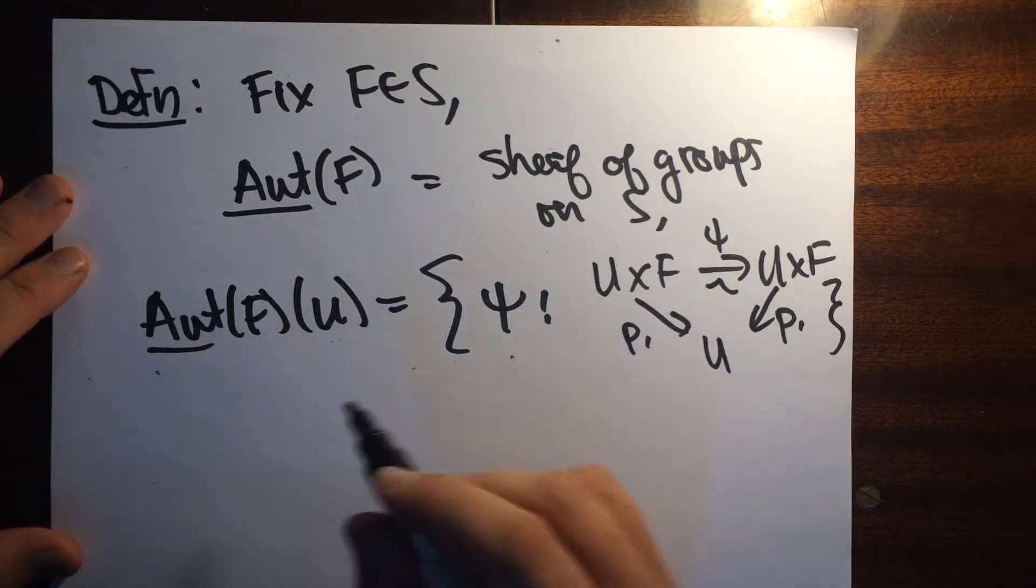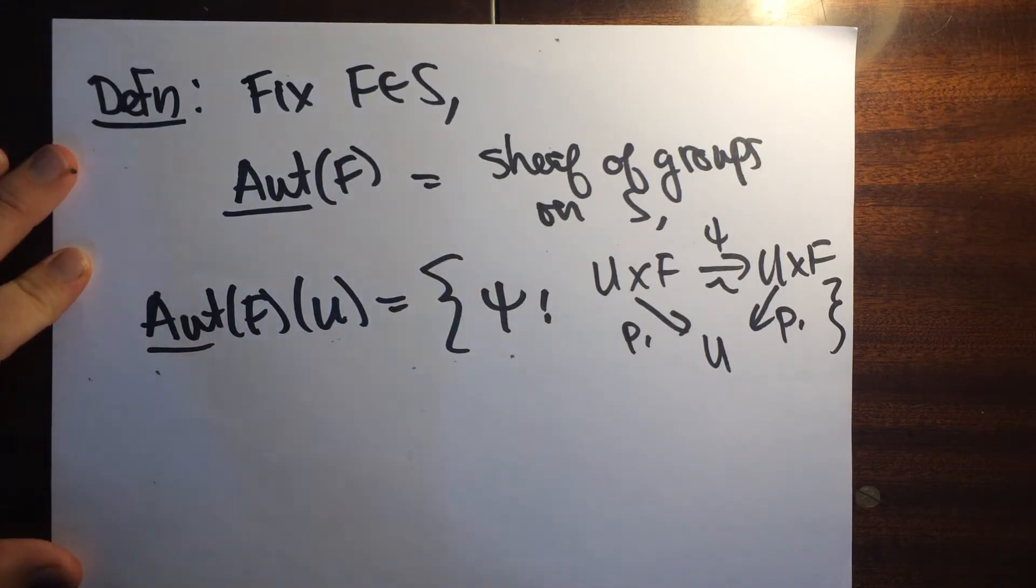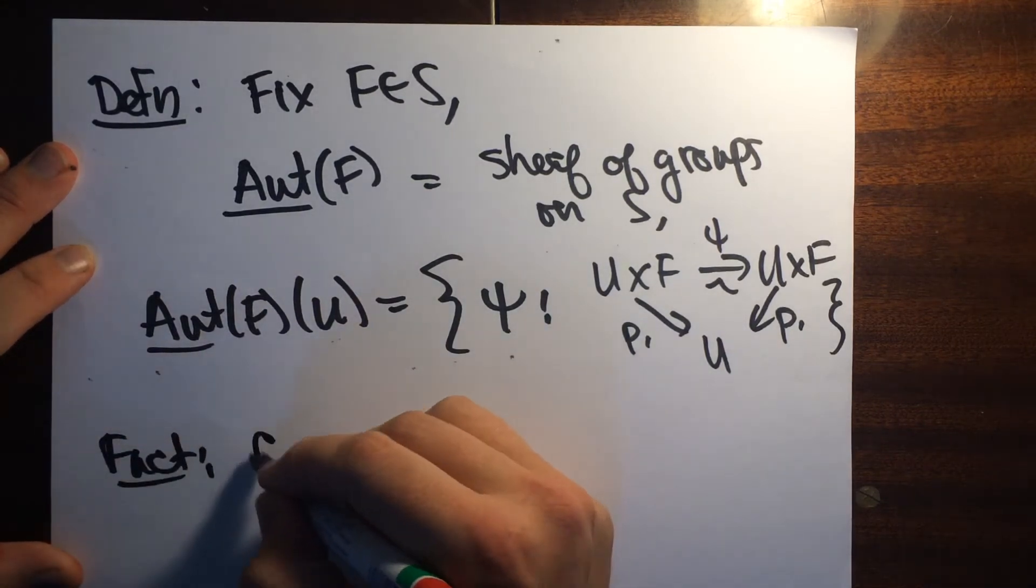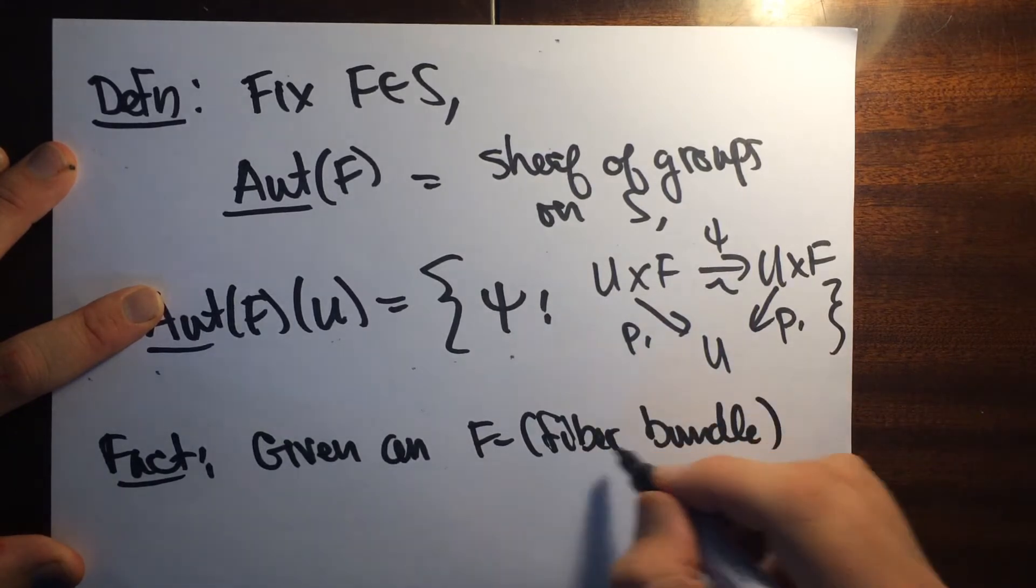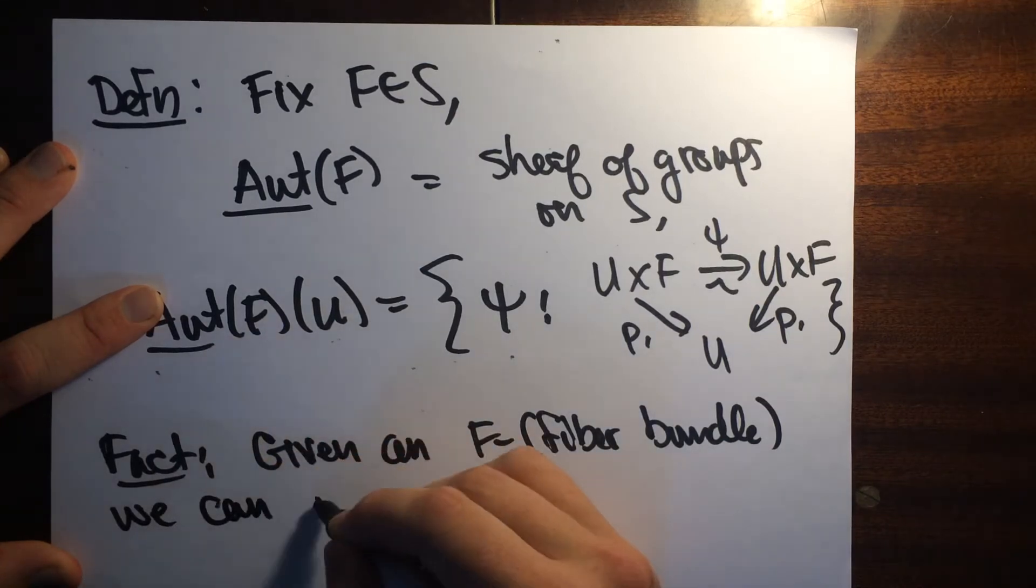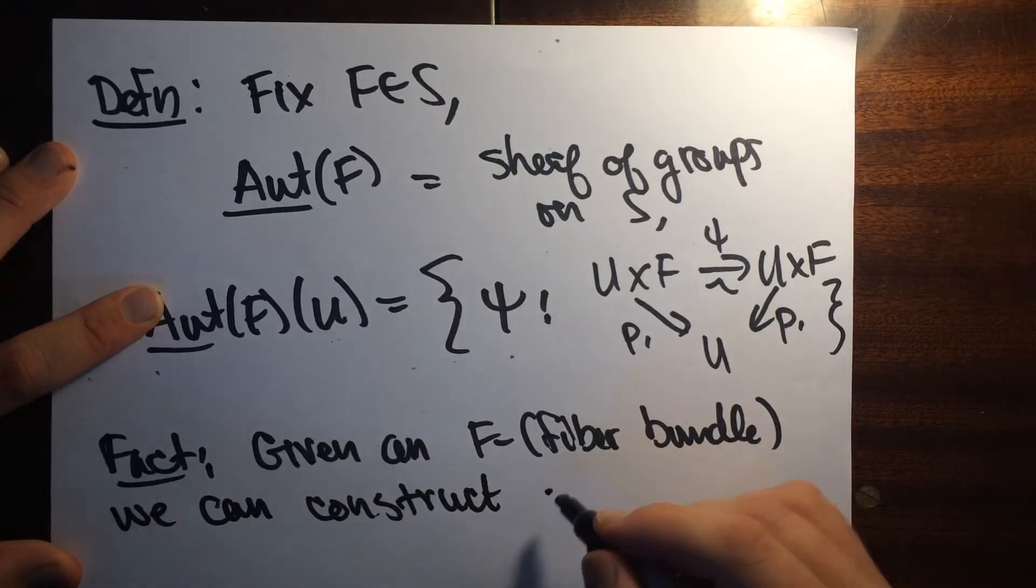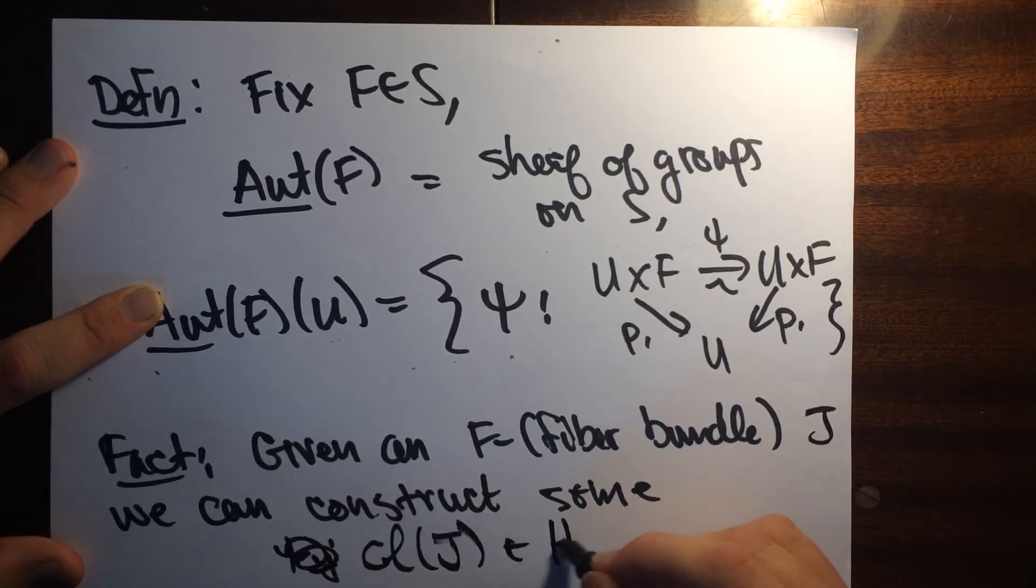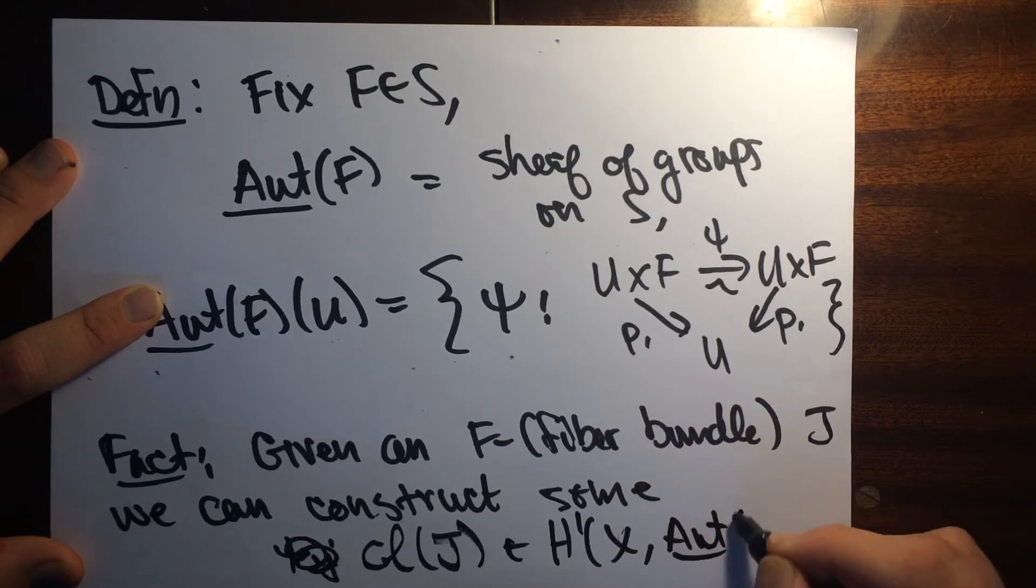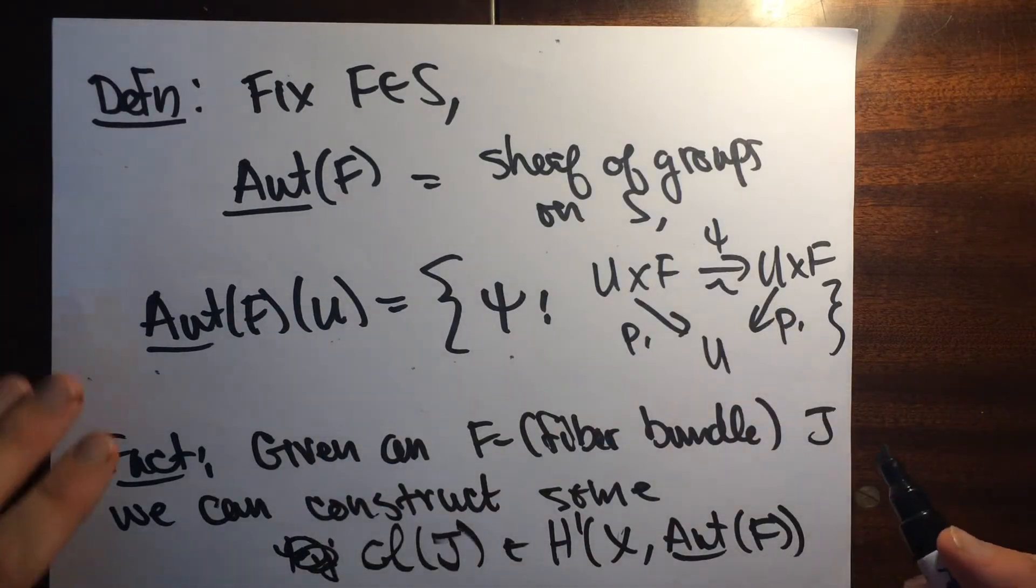Given a cover, I have a bunch of transition maps. Let me tell you a fact. Given an F fiber bundle, we can construct some Psi ij, a class, let's call this thing J, that lives in H1 of X with coefficients in this thing. This is some non-abelian check cohomology. This thing is the cohomology class of this thing. So how do we do this?